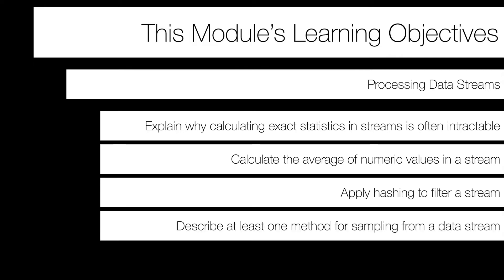Finally, we'll talk about methods for sampling, and you should be able to identify or describe at least one of these sampling methods — either sampling for a fixed proportion of elements, say 10 percent of the stream, or a fixed number, say 10 elements from a stream.